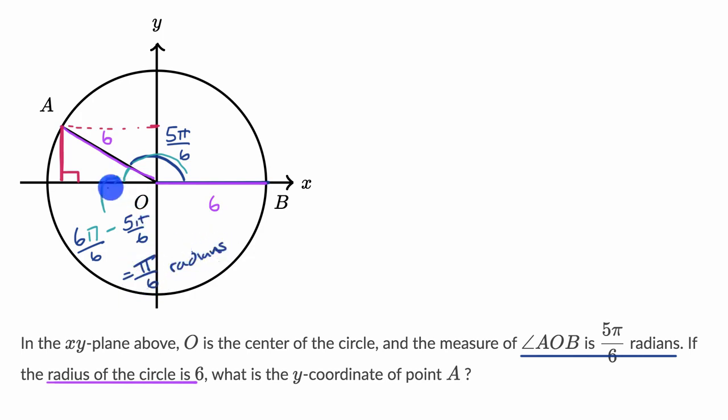Now, this still might not be familiar to you. What is pi over six radians? Well, you could think about converting that to degrees. We know that pi radians is equal to 180 degrees, because pi radians is halfway around the circle. So you divide that by six. This is equivalent to, let me write it this way. This is equivalent to 30 degrees.